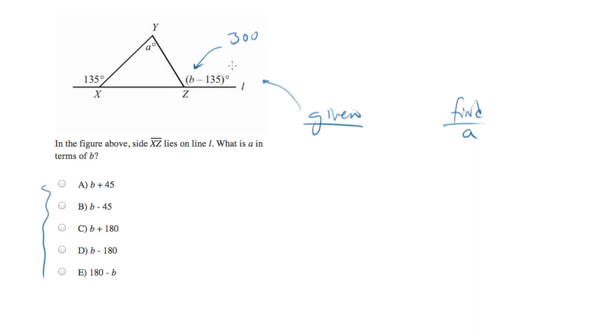I'm picking this number so that when I subtract 135 from 300, I get something which is conceivable, which is 165 for that angle right there.